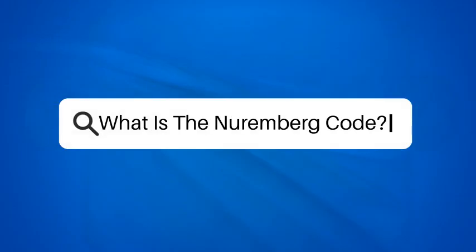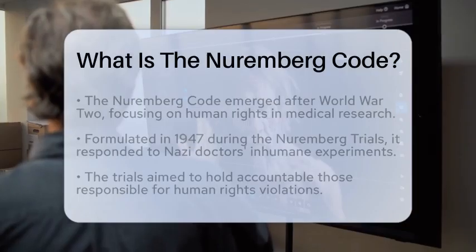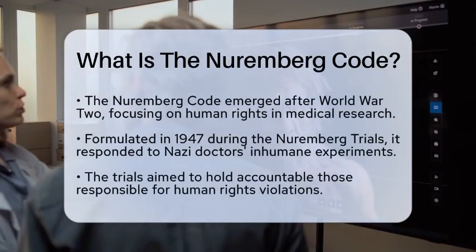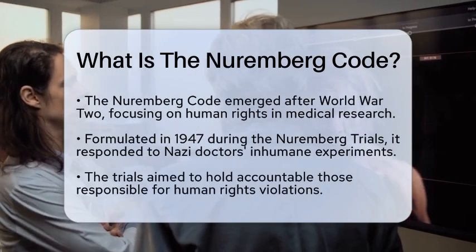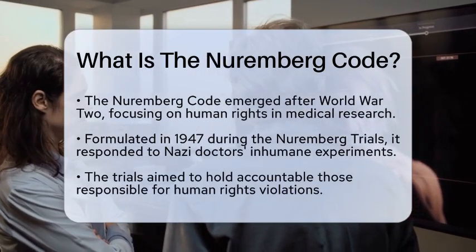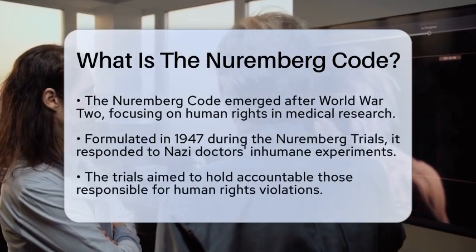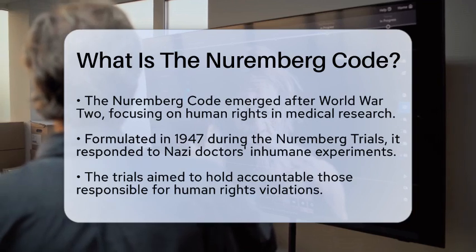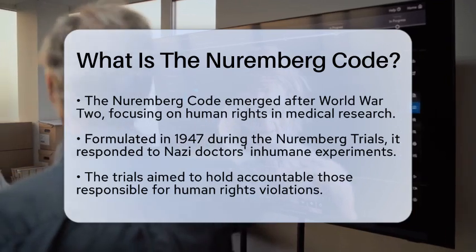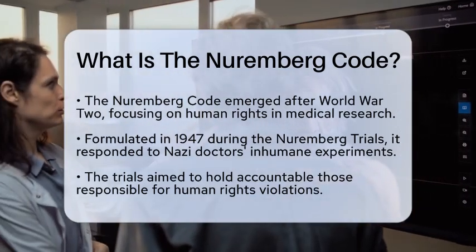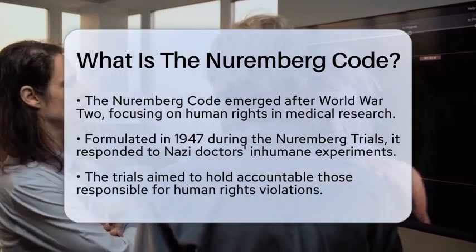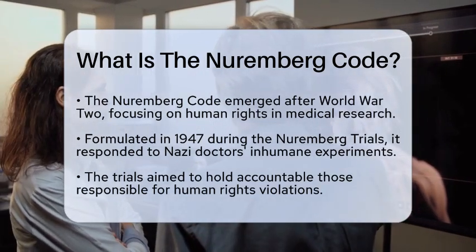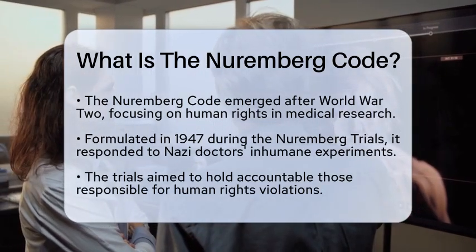What is the Nuremberg Code? Imagine a time when the world was grappling with the aftermath of a devastating conflict, and the very principles of human rights were being questioned. In the wake of World War II, a set of ethical guidelines emerged that would shape the future of medical research and human experimentation. This set of guidelines is known as the Nuremberg Code.